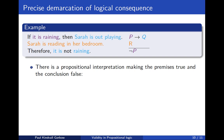I welcome you to pause the video and find such an interpretation — assign truth values to P, Q, and R such that the premises are true but the conclusion is false. Here comes the answer: simply assign true to all of P, Q, and R. The first premise becomes true because if P is true and Q is true, then P implies Q is also true. The second premise is true simply because R is true, and the conclusion is false because P is true and therefore not-P is false.